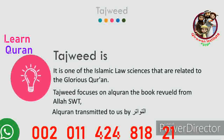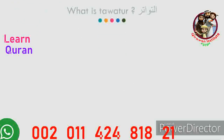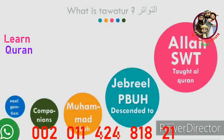What is at-tawatur? At-tawatur — its definition is that something mutawatir is like a chain. Allah subhanahu wa ta'ala taught Al-Quran to Jibreel alayhis salam, then Jibreel alayhis salam descended to the Prophet Muhammad sallallahu alayhi wasallam, then Prophet Muhammad sallallahu alayhi wasallam taught Al-Quran to the companions.